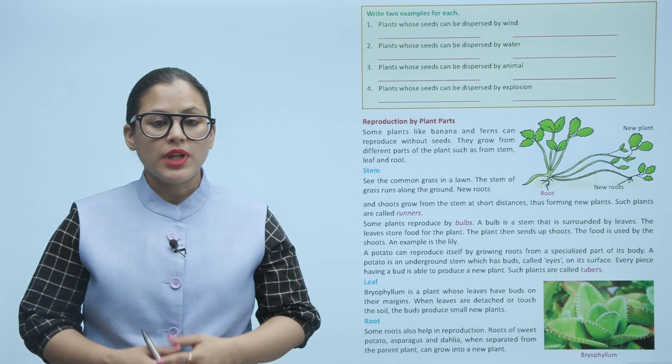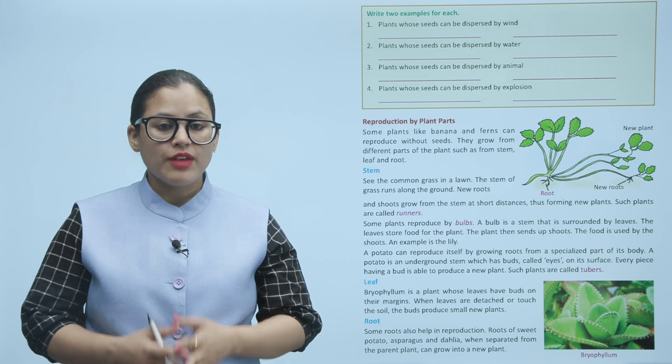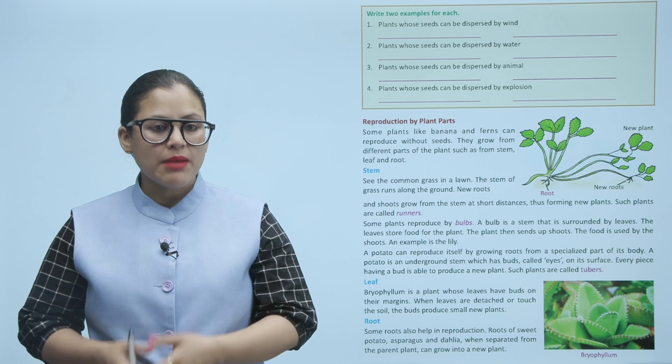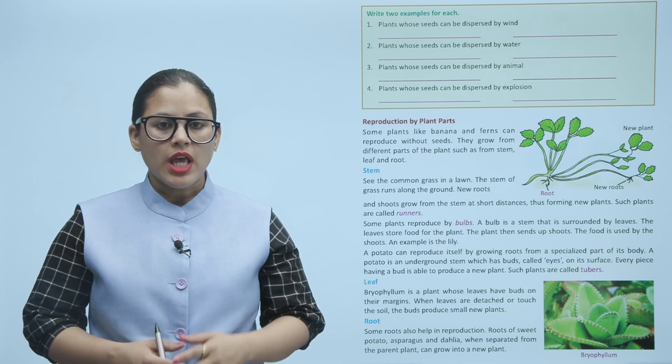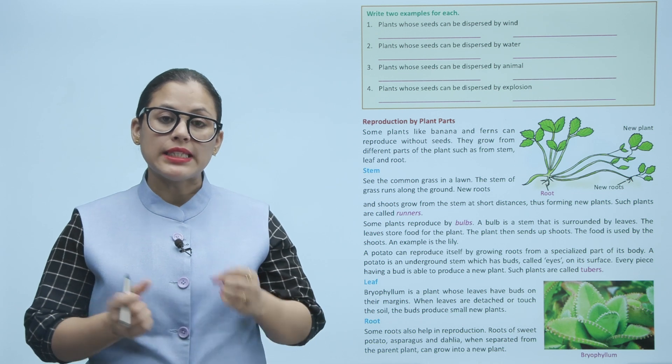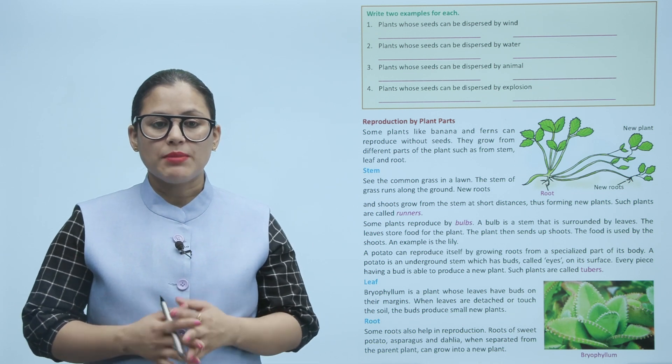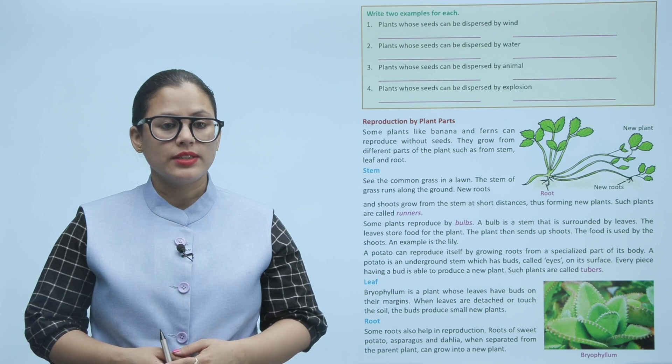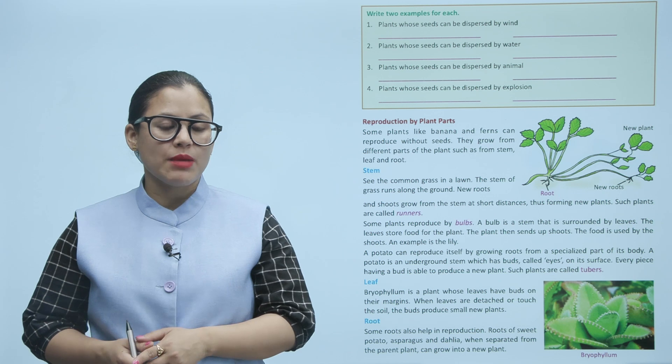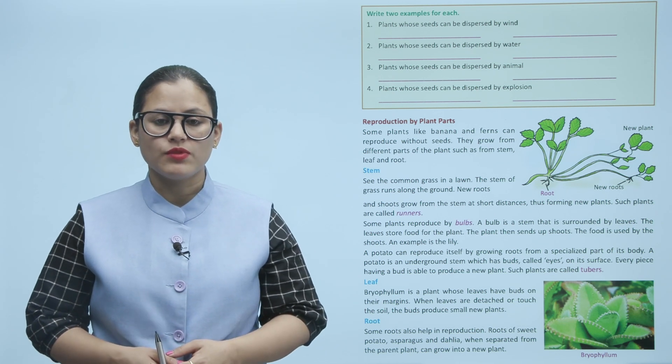Reproduction by plant parts: Some plants like banana and ferns can reproduce without seeds. They grow from different parts of the plant such as from stem, leaf, and root. Stem: The common grass in a lawn, the stem of grass runs along the ground.